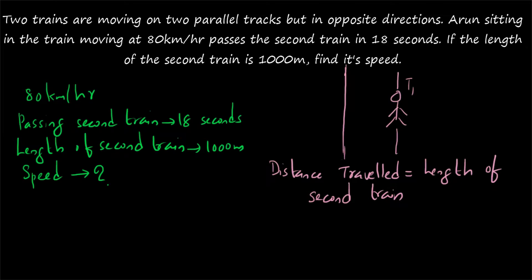Questions won't be asked in a very complicated manner. Here the length of the second train is given, so obviously it should be the distance travelled — otherwise we cannot proceed. You just need to verify whether the distance travelled is indeed equal to the length of the second train. So here the distance travelled equals 1000 metres.